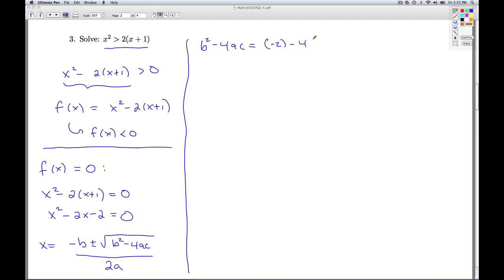So b squared, b is negative 2, minus 4 times a, times c. So negative 2 squared is going to be 4, plus 8 is 12. Since 12 is a positive number, we're going to get two real solutions. And since 12 is not a perfect square, they're going to be irrational solutions. So x then is equal to the opposite of b. So that would be 2 plus or minus the square root of the discriminant, 12, over 2 times a, which is 2, which is 2 plus or minus. I can reduce the square root of 12 to 2 square roots 3 over 2. So I can factor the 2 out of the numerator and cancel the 2 in the denominator. So I get x equals 1 plus or minus square root 3.